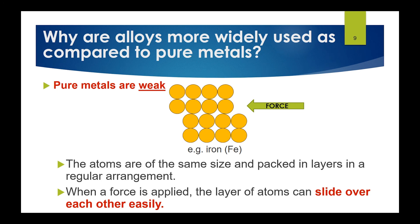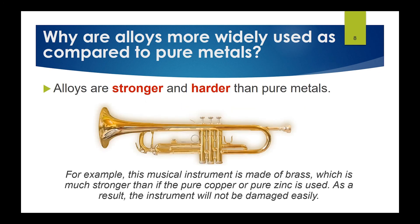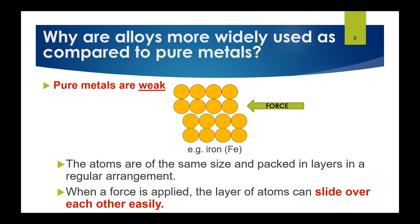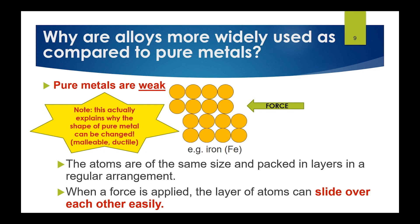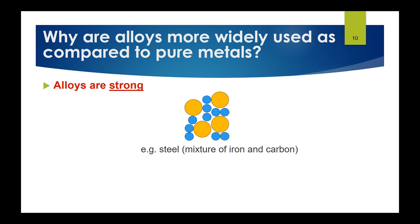When a force is applied to a pure metal, the layers of atoms slide over one another, changing the shape of the material. While this is what makes pure metals malleable and ductile — useful when hammering or stretching into wires — it also makes them too weak for many applications. For uses where we need a stronger material, we use alloys instead.